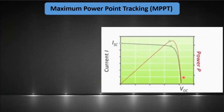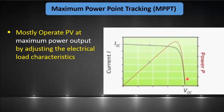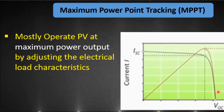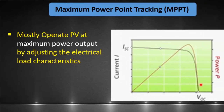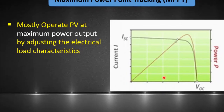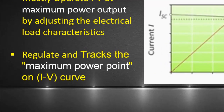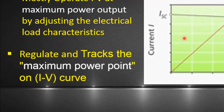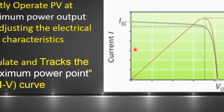MPPT stands for maximum power point tracking. It is a technique used in the field of solar power to track the maximum power point of the solar panels' current-voltage (IV) curve, and adjust the electrical characteristics of the connected load to ensure that the source operates at maximum power point, maximizing the energy conversion efficiency and the amount of power generated.